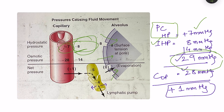If the oncotic pressure decreases, there will also be chances of developing pulmonary edema. And as mentioned, pulmonary capillary permeability also determines how much fluid moves - if pulmonary capillary permeability increases, more fluid will move out of the pulmonary capillaries even with the same forces. So fundamentally, these are the causes of pulmonary edema.